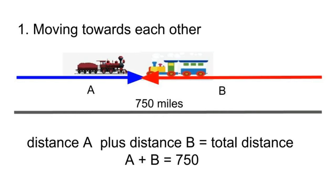If you have observed, the distance traveled by train A plus the distance traveled by train B is just equal to the total distance. A plus B equals 750.